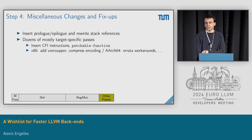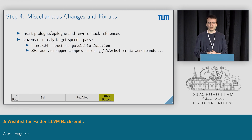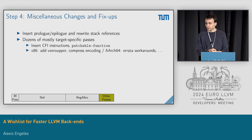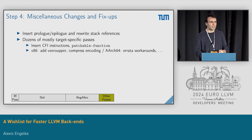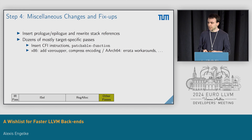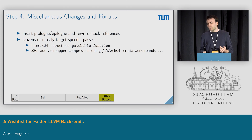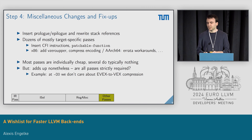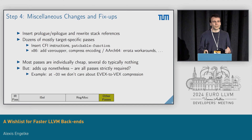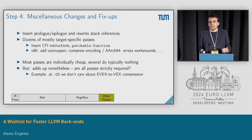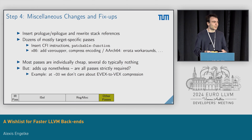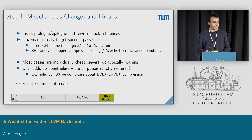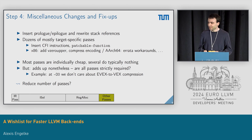After register allocation, we do miscellaneous changes and fix-ups. The biggest one is insertion of the prolog and epilog into functions — saving callee-saved registers and rewriting all references to the stack using the stack or frame pointer. Then there are dozens of mostly target-specific passes: for example, adding vzeroupper on x86, encoding optimizations, or workarounds for errata. Most of these passes are individually cheap and several do nothing at all in most cases, but this adds up nonetheless. This raises the question of whether we need all these passes or could combine or remove some — for example, at O0 we don't care about code size optimization that compresses EVEX instructions to VEX.